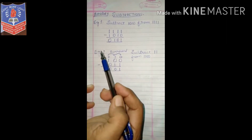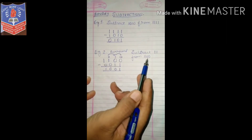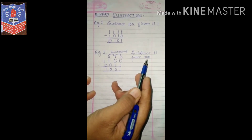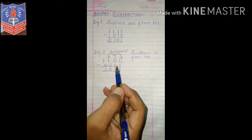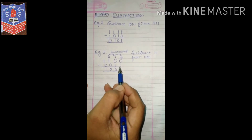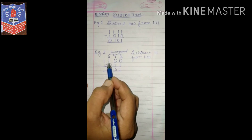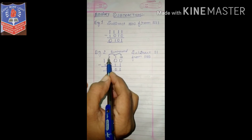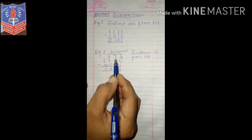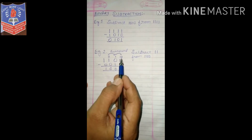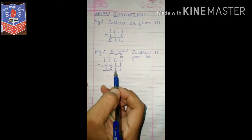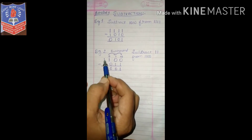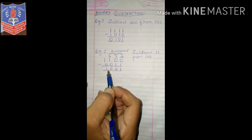Now taking example 2: subtract 11 from 1100 — this is binary, not decimal. Writing 1100 minus 0011. 0 minus 1 — we cannot, so we borrow. The next position is also 0, so we borrow from further left. Taking 1 from the third position, cascading the borrow. Using the rule that 10 minus 1 gives 1 in binary, 1 minus 1 gives 0, 0 minus 0 gives 0, 1 minus 0 gives 1. Answer is 1001.